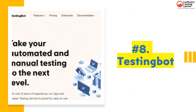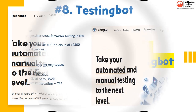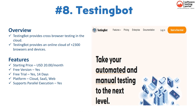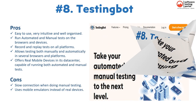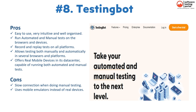Number eight is TestingBot. TestingBot provides cross-browser testing in the cloud with an online cloud of 2,300 browsers and devices. You can test your website automatically and manually. Features include a 14-day free trial, starting price of $20/month, available on cloud SaaS web platforms, webinars and documentation training, online support, and parallel execution. Pros: easy to use, intuitive and well-organized; runs automated and manual tests on browsers and devices; record and replay tests on all platforms; allows testing both manually and automatically; and offers real mobile devices in its data center.